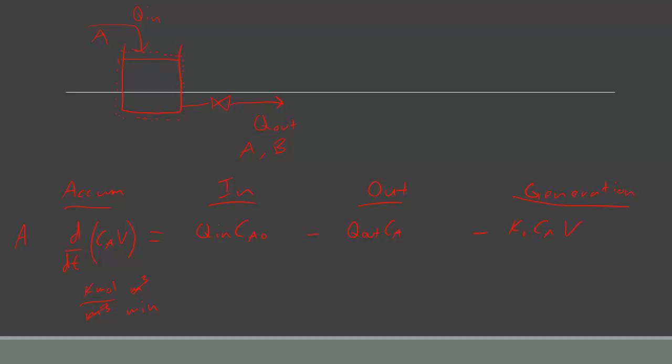We need to solve for the product of these two. One thing we can do is apply the product rule for derivatives, where the derivative of CA times V with respect to time equals the concentration of A times the derivative of the volume with respect to time, plus the volume times the derivative of the concentration of A with respect to time. That is still equal to the balance terms: Q in times CA0 minus Q out times CA, minus what's being consumed by the reaction, K0 times CA times V.